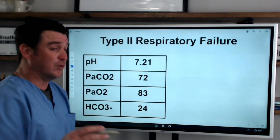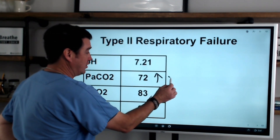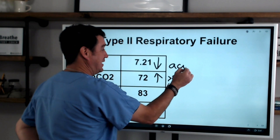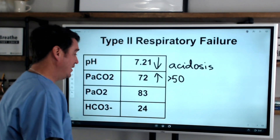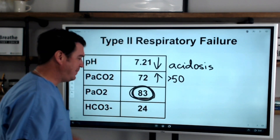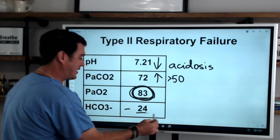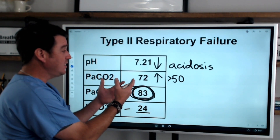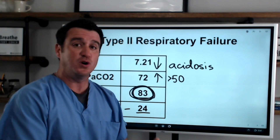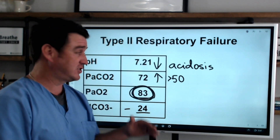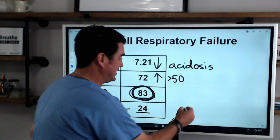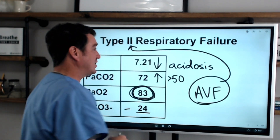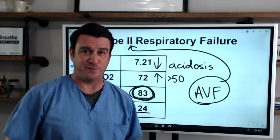Now let's look at type two respiratory failure on a blood gas. We see a high CO2 greater than 50, and we see a reduced, acidotic pH. So this is an acidosis that is present. We have a normal PaO2 and a normal bicarb — this is just our starting normal state. This patient is 100% failing to effectively remove carbon dioxide. That's going to cause their CO2 to go up, their pH to go down, and we can say this person is in acute ventilatory failure — type two respiratory failure, also known as hypercapnic respiratory failure.